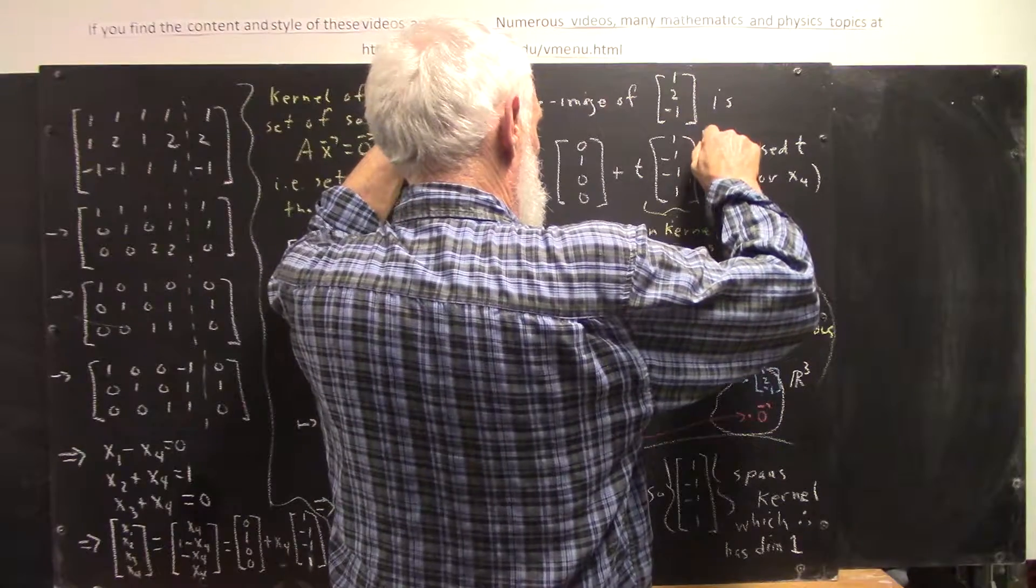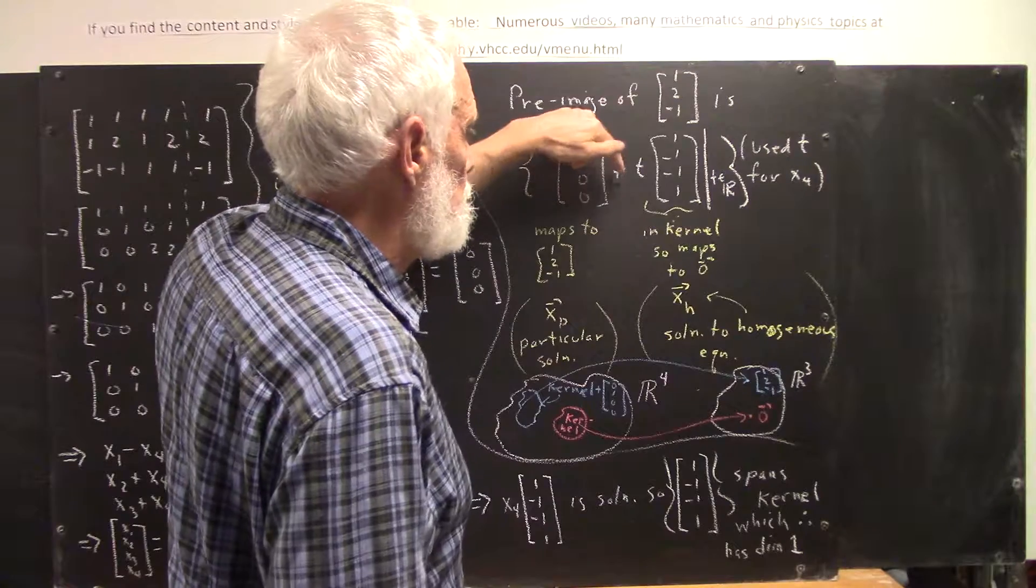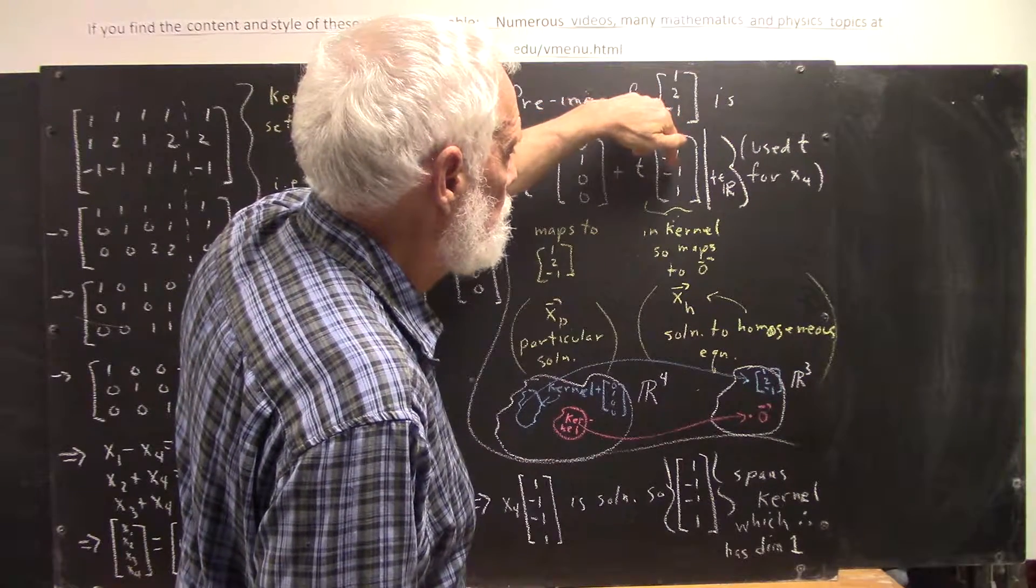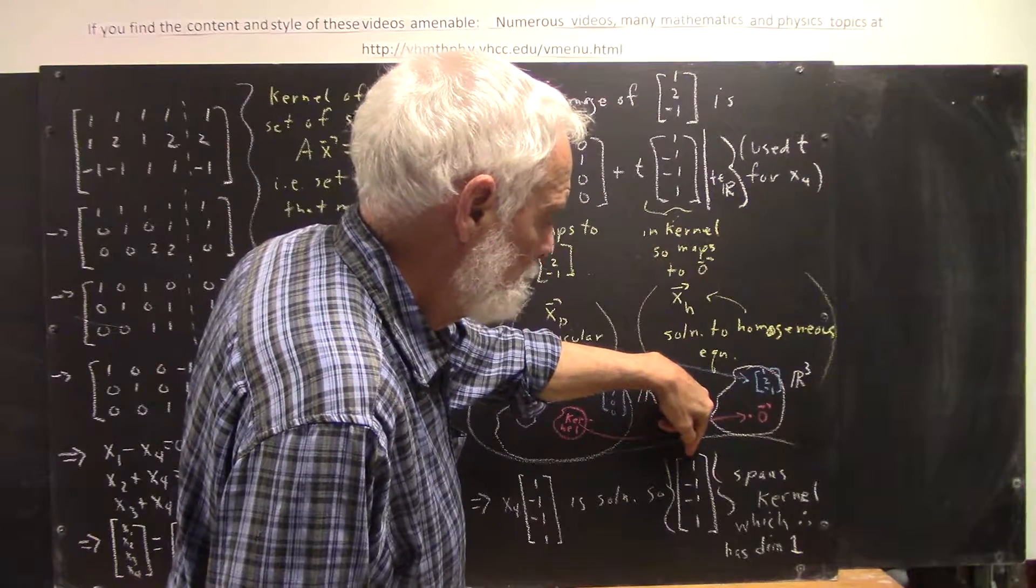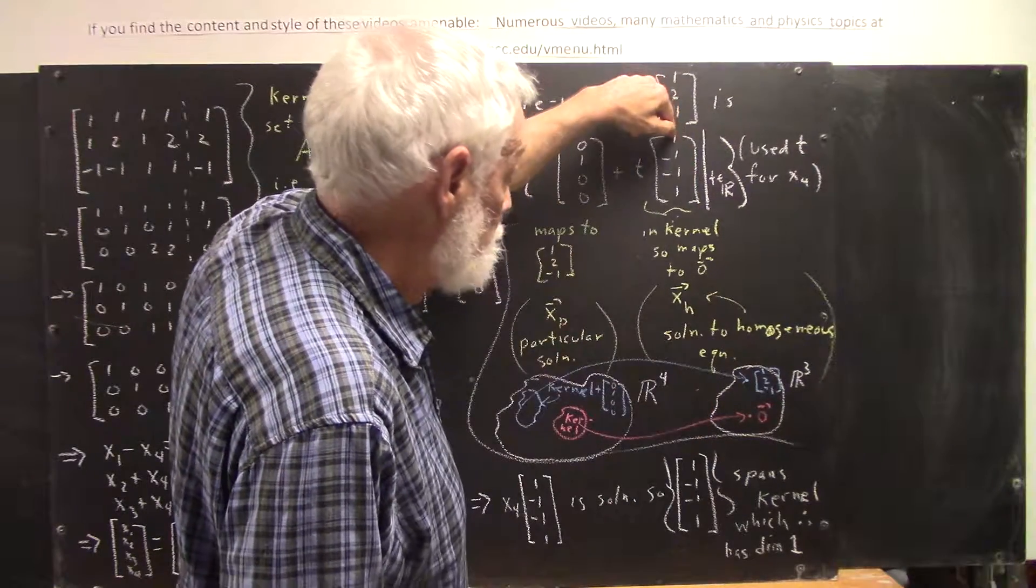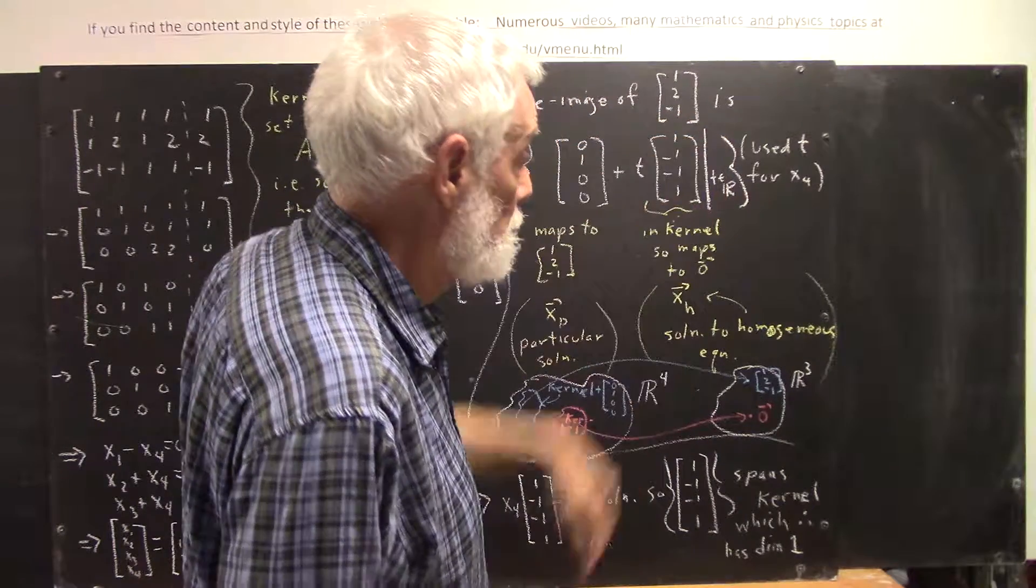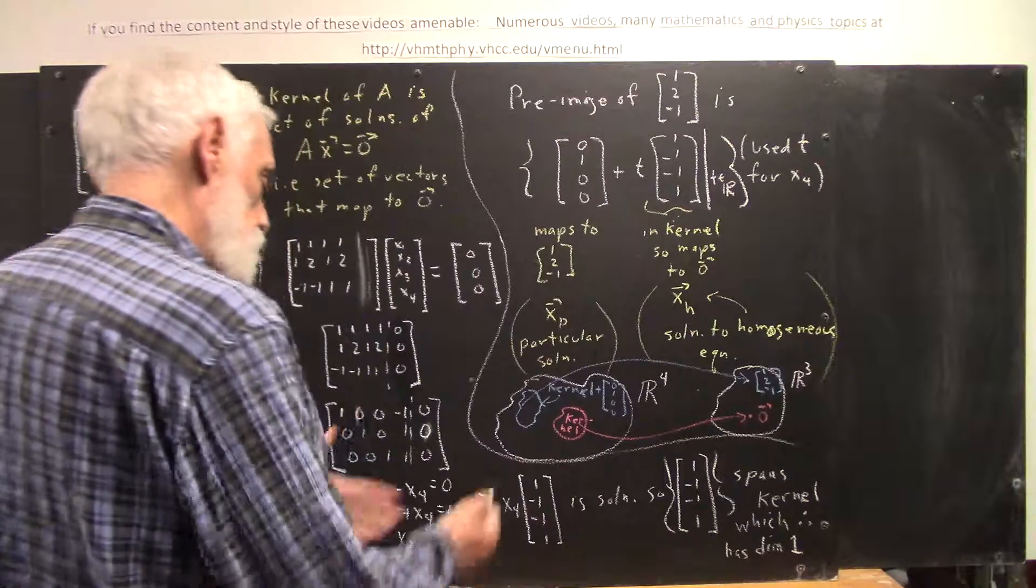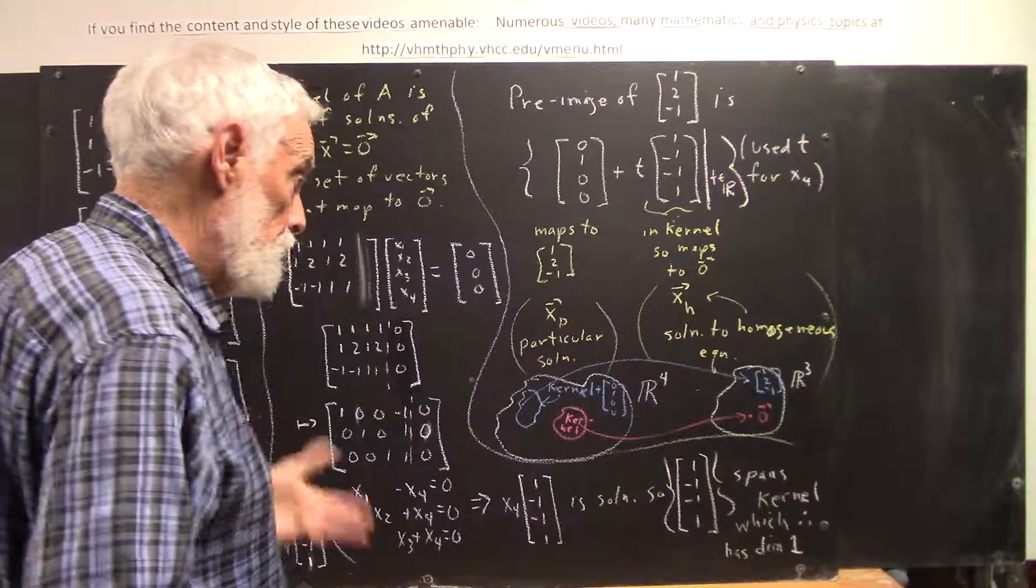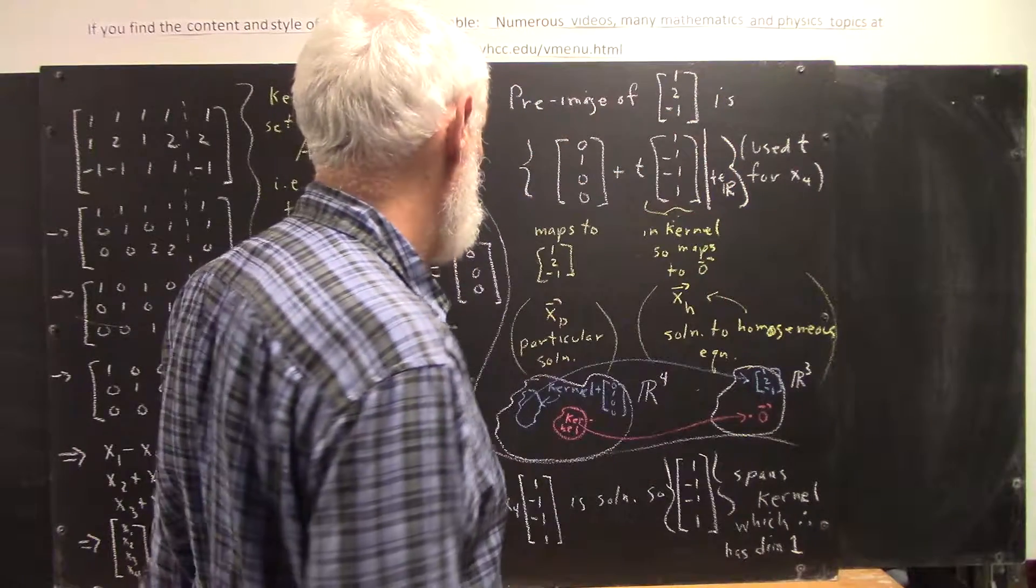It's a set of vectors 0, 1, 0, 0 plus T times 1, negative 1, negative 1, 1, a vector that spans the null space, for T being real numbers. And here, we use T instead of X4. We used X4 down here. I used T up here. It means the same thing. X4 can be anything, any real number. T can be any real number.